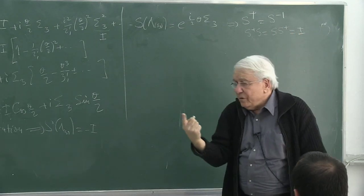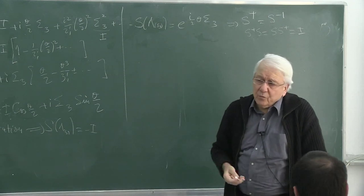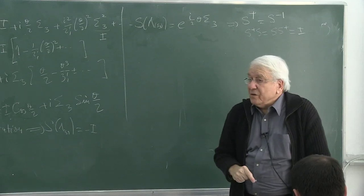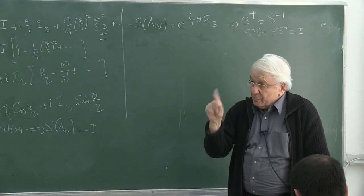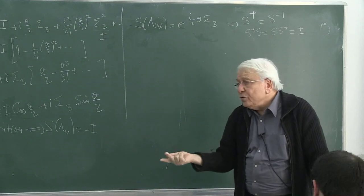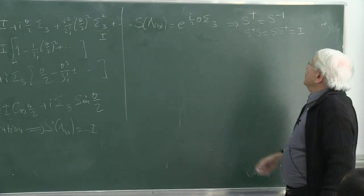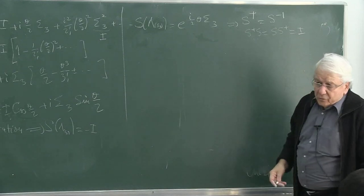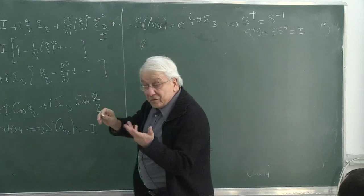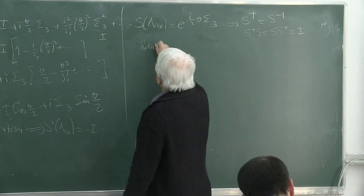I'm doing it for the third rotation only, but obviously it is valid for all other rotations or even a rotation about an arbitrary direction. Because if you take N being a unit vector, N dot S vector, then it's again Hermitian, therefore the associated S is unitary. So rotations in the spinor space are unitary.